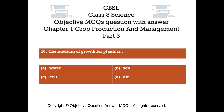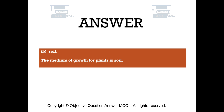Question number 10. The medium of growth for plants is. Option A: Water. Option B: Soil. Option C: Cell. Option D: Air. The right answer is option B — Soil. The medium of growth for plants is soil.